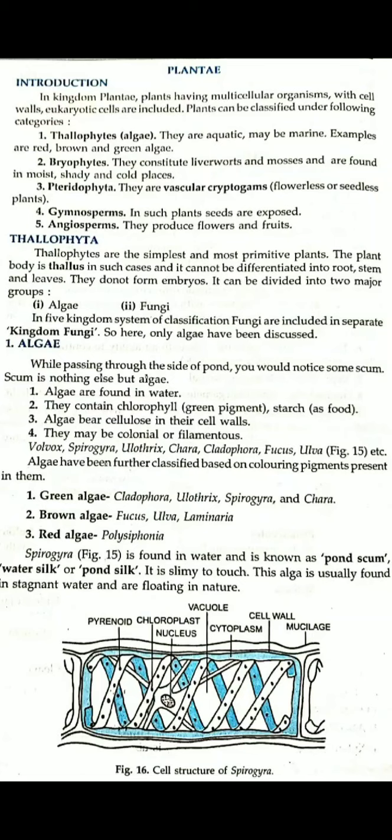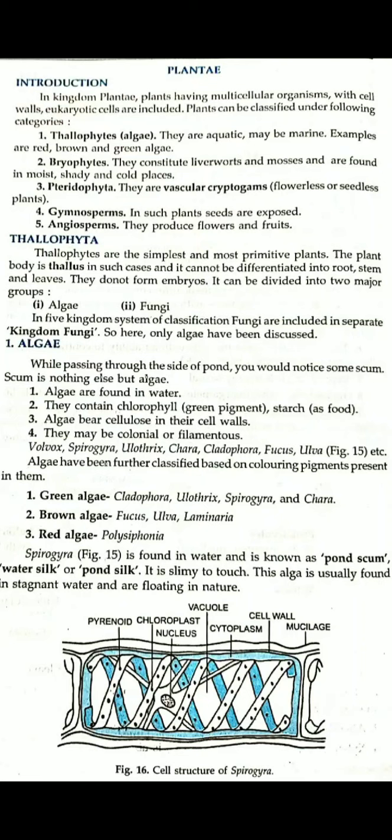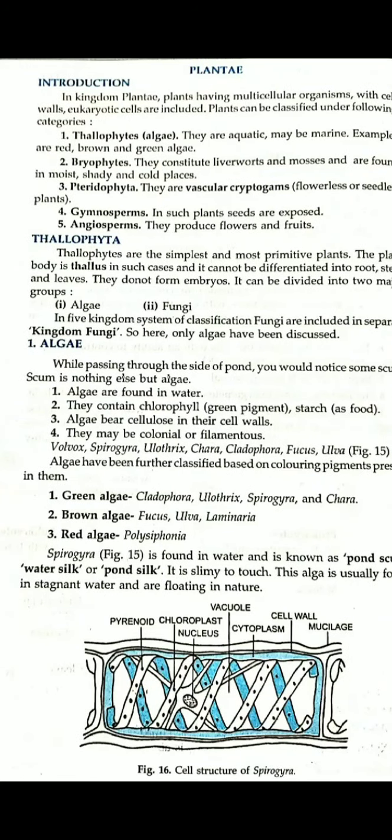Algae are divided into three types based on their colouring pigment: green algae, brown algae and red algae. For example, Spirogyra is green algae; Fucus is brown algae; Polysiphonia is red algae. Spirogyra is also found in ponds — you can touch it and it feels slimy.